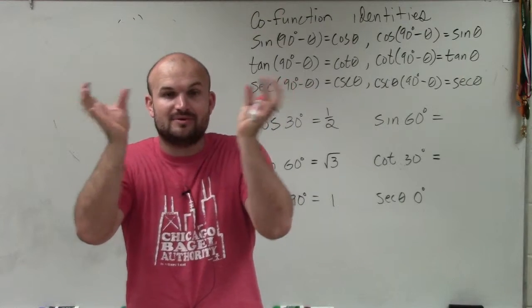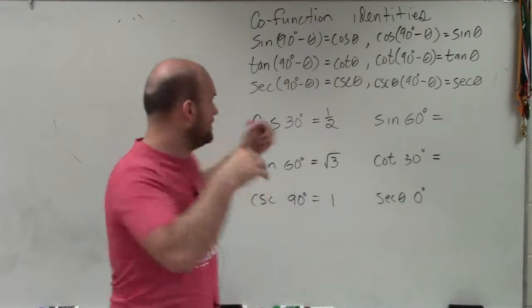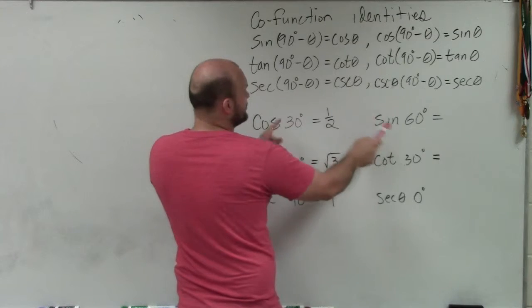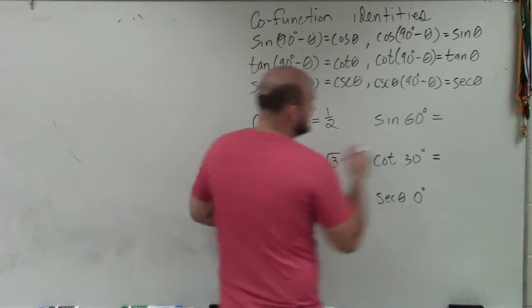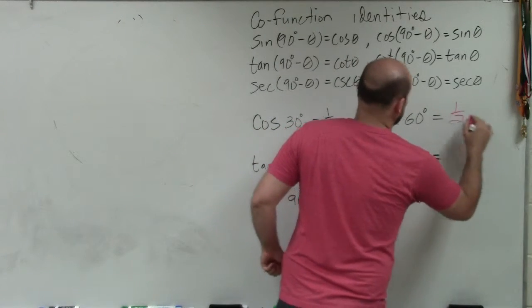The difference of them between 90 - if the difference of these two within 90, then they're co-function identities. So therefore, that is going to be 1 half.